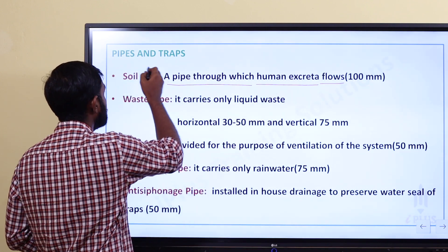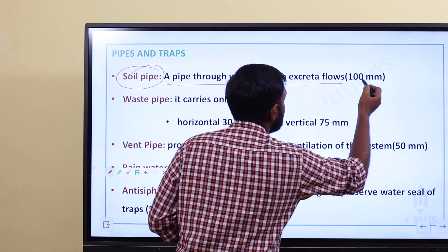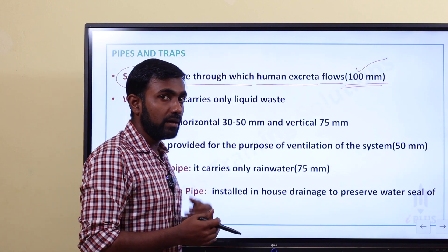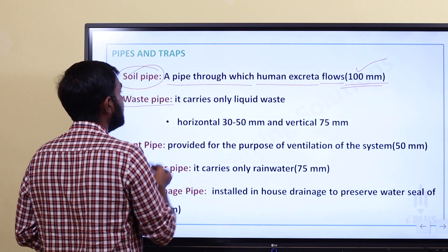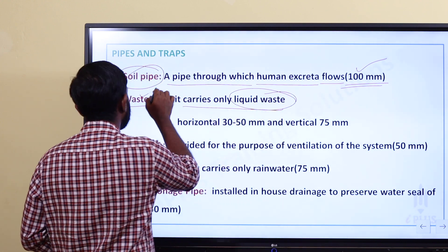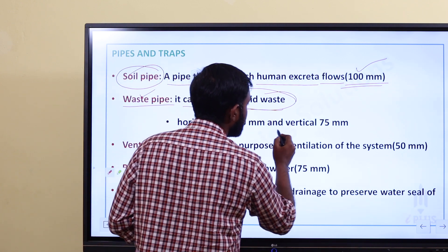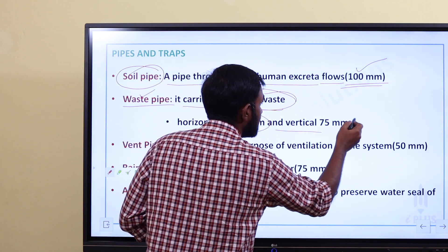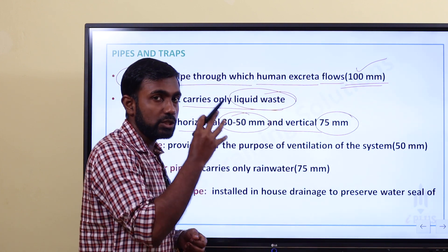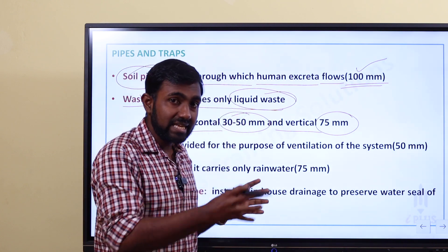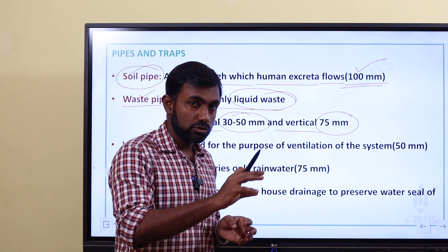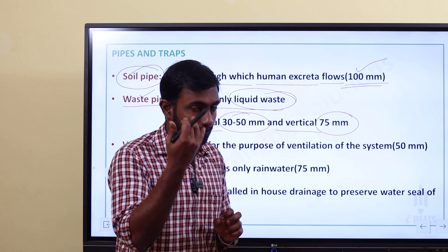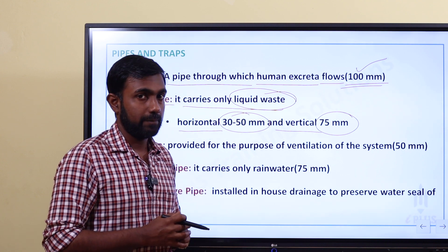For soil pipe, the minimum diameter is 100 mm. For waste pipe, which carries liquid waste: horizontal waste pipe is 32 to 50 mm, and vertical waste pipe is 75 mm.